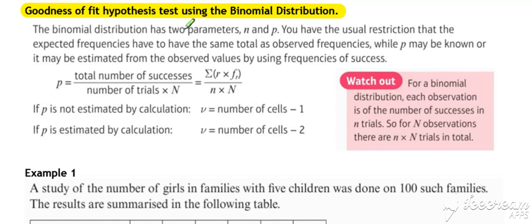Now we can get two scenarios arising here for a binomial. We can have a situation where the probability for the binomial may be known or given, or we might have a situation where it may need to be estimated from the observed values.